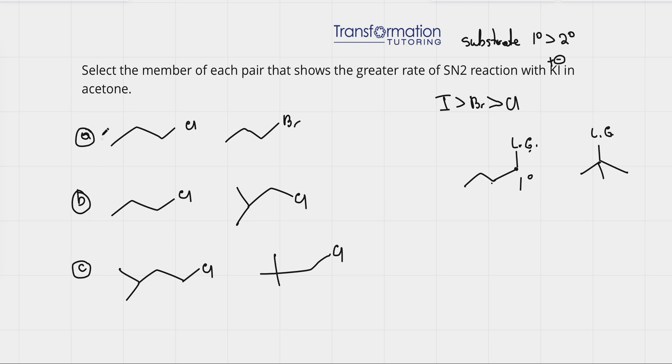let's go ahead and do these problems. We can see that everything that is given to us here is a substrate. So, we're looking at the substrates, and these halogens on the substrate, these are the leaving groups.